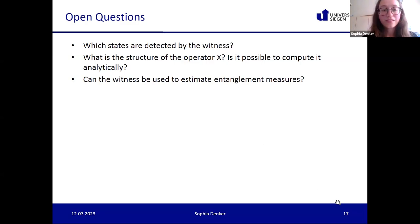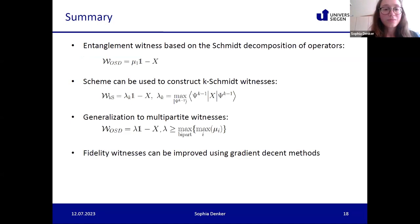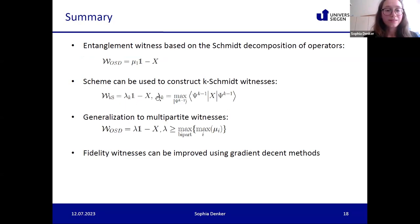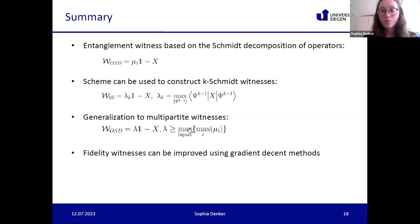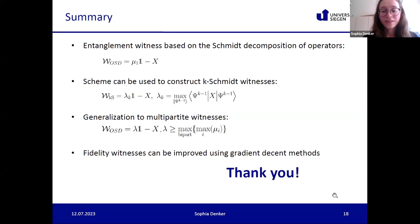Another open question is whether we can define entanglement measures using these witnesses. To summarize: we can write down entanglement witnesses using the Schmidt decomposition in operator space, of the form mu_1 times identity minus X. We can construct Schmidt witnesses with the same structure where lambda_k is found by maximizing over pure states with Schmidt number k minus one. This generalizes to the multipartite case by considering all possible bipartitions and taking the largest coefficient, and the fidelity witness can be improved using gradient descent methods.